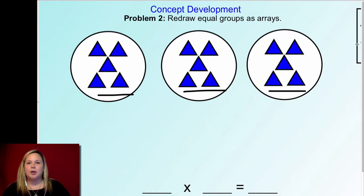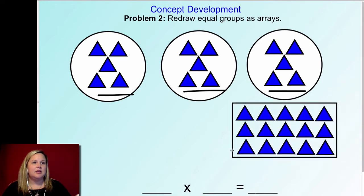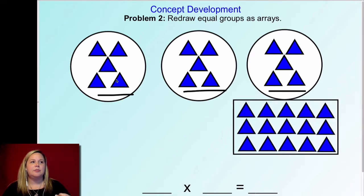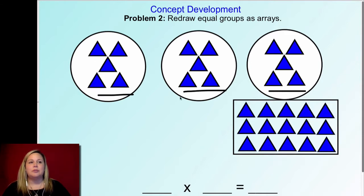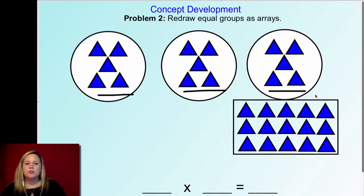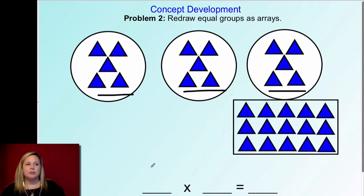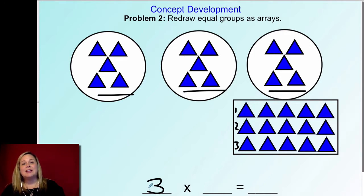Okay friends, let's talk about it — if you still need time, pause and keep working. This is what my array looks like. I have three groups — one, two, three groups, so I have three rows: one, two, three. I also noticed that there were five in each group, so I made sure I had five in each row: one, two, three, four, five. Each one lined up nice and neat, straight up and down and side to side. For the multiplication expression, the first number is your number of groups: three. The second number is how many are in each group: five.